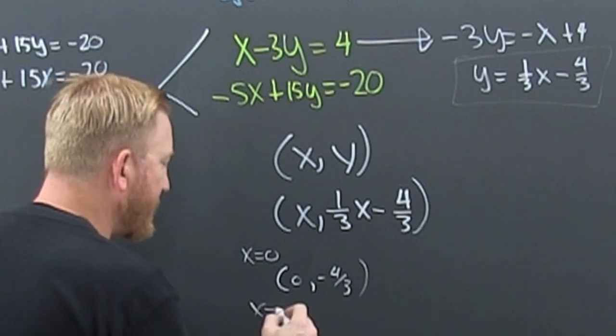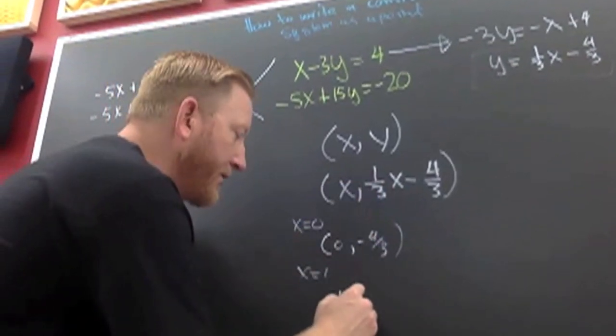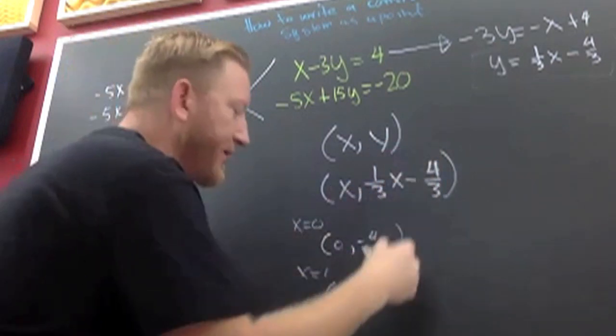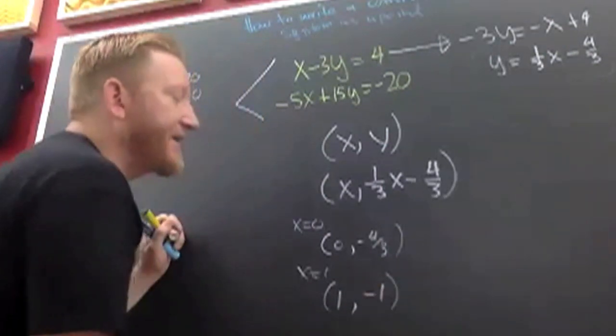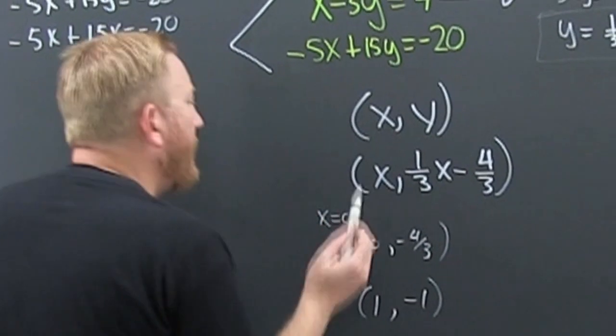That's going to be a solution. What if x was equal to one? Well, then that's one, and one third minus four thirds is minus three thirds is minus one. That's going to be a solution.